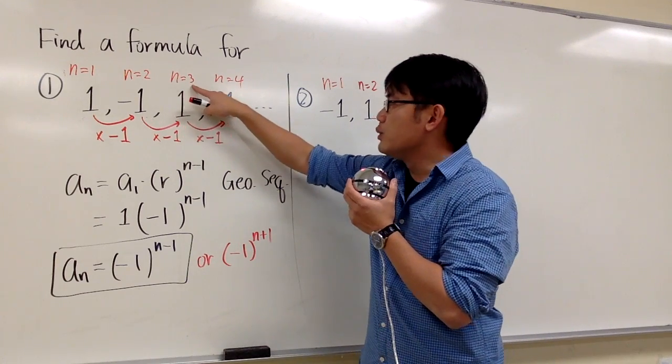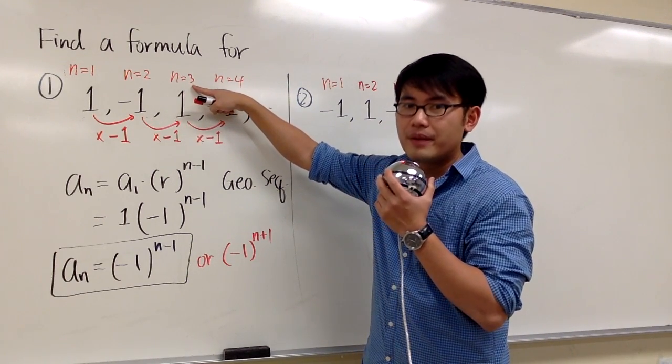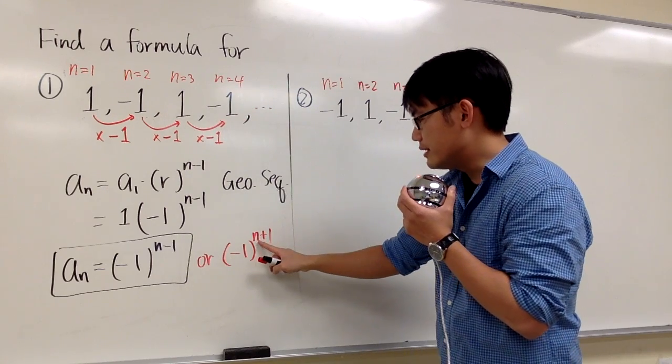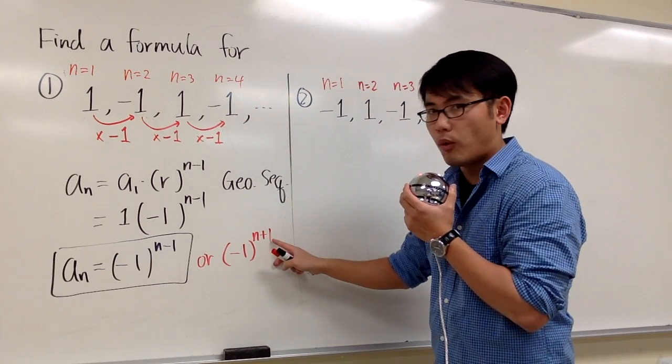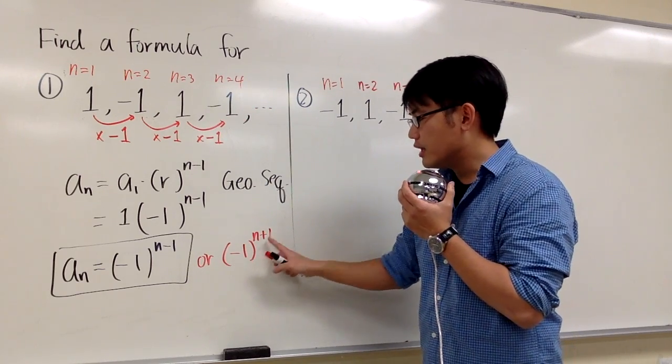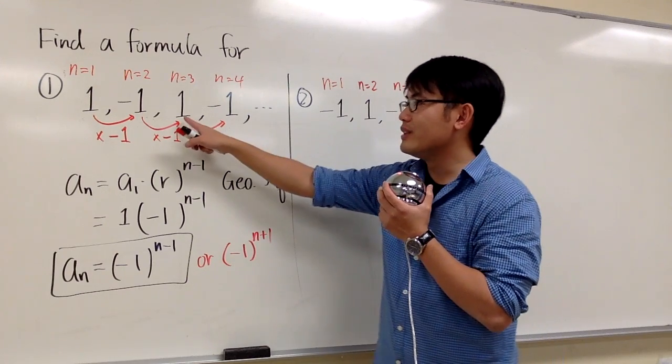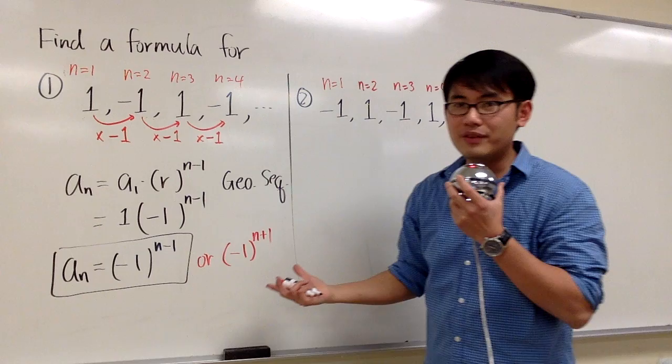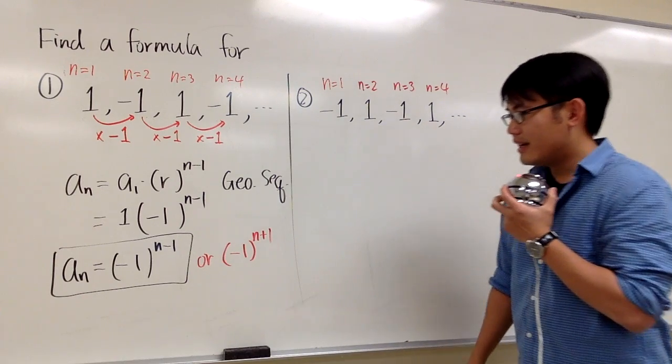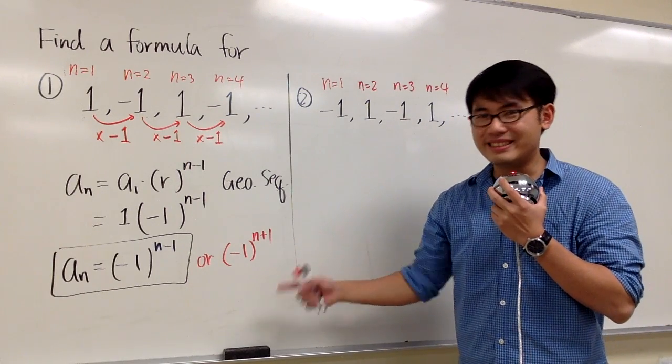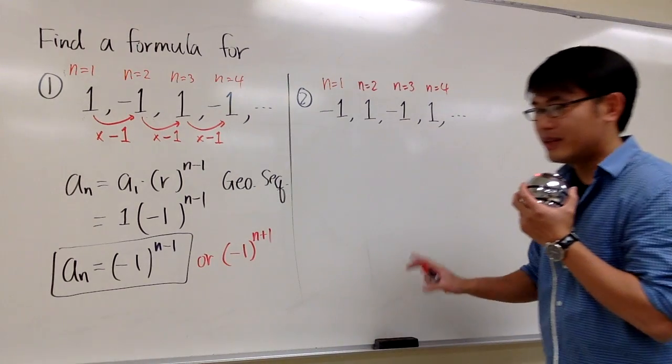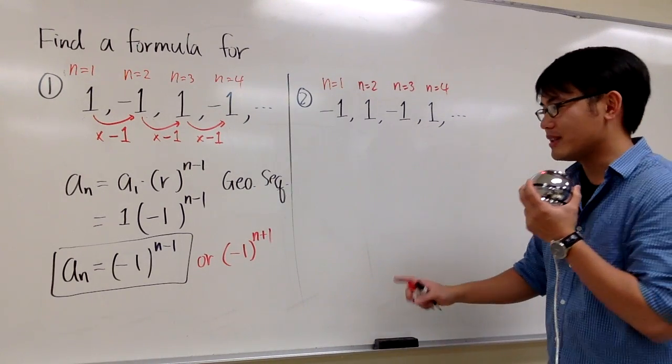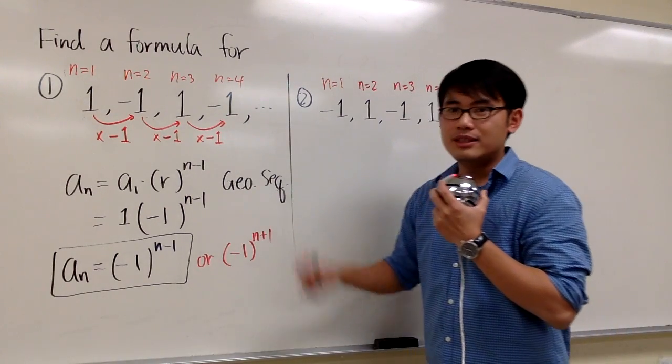For example, if n is equal to 3 for the third term, if I plug in 3 into this n, 3 plus 1 is 4, negative 1 to the fourth power, we also end up with the correct value, the positive 1. In fact, these two are equivalent. And can you think about another way to describe this pattern? You can use a trig function to do that. But now let's just focus on geometric sequence.